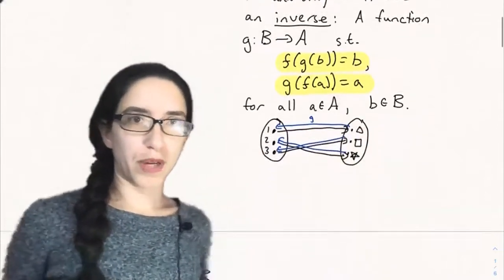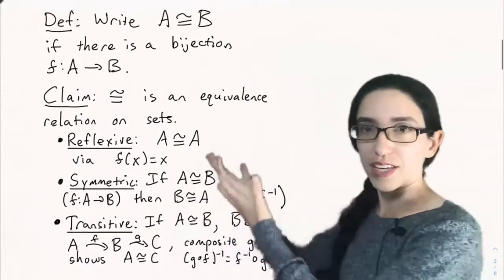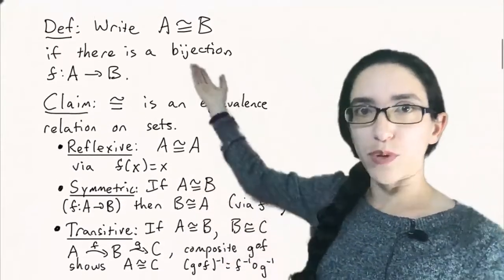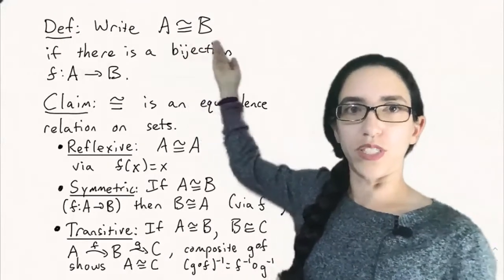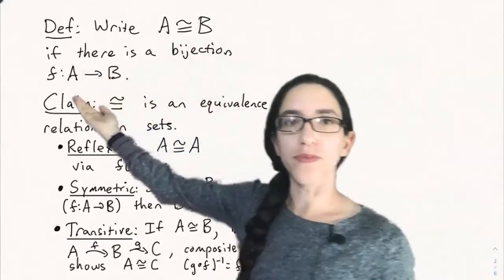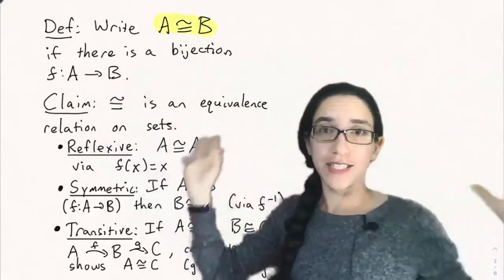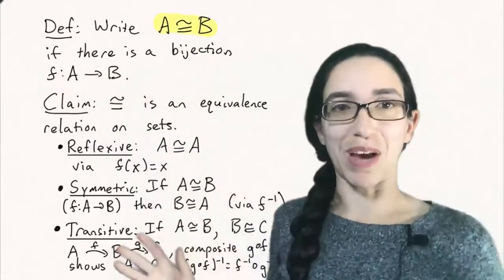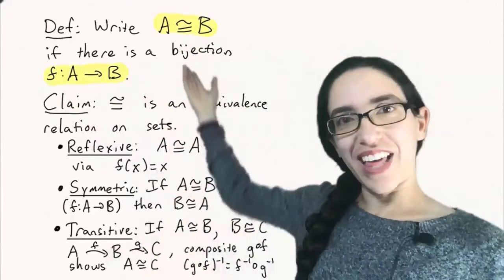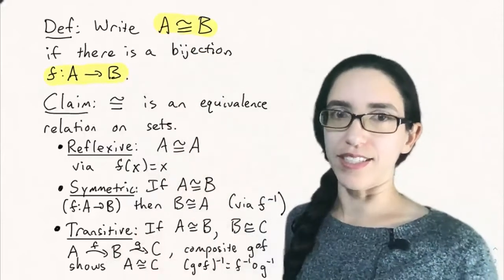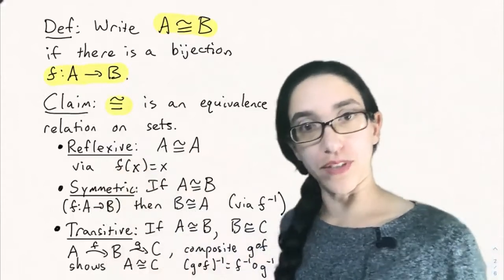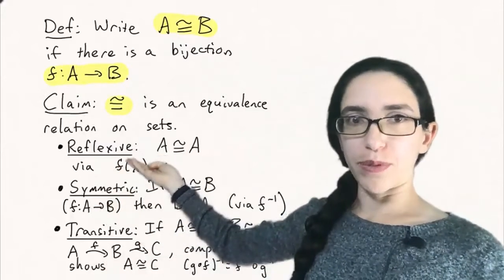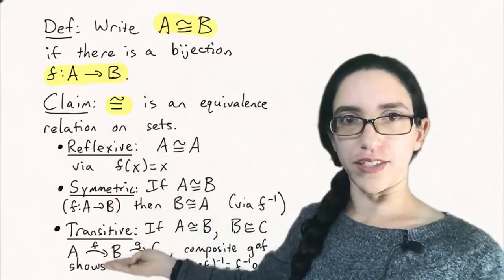So this theorem comes in handy for proving things like the following. If we write A is equivalent to B, let's define a relation A is equivalent to B if there's a bijection from A to B. Then that relation is actually an equivalence relation on sets in the sense that it satisfies the three properties of equivalence relations that we've discussed before. And those three properties are reflexive, symmetric, and transitive.